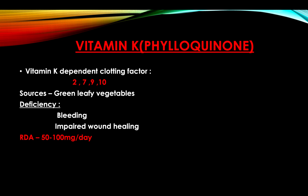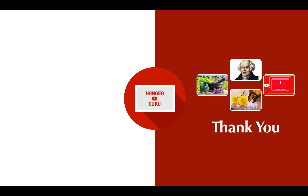Vitamin K, or phylloquinone — Vitamin K-dependent clotting factors are 2, 7, 9, and 10. Sources include green leafy vegetables. Deficiency produces bleeding and impaired wound healing. RDA is 65 to 200 mcg per day. Thank you.